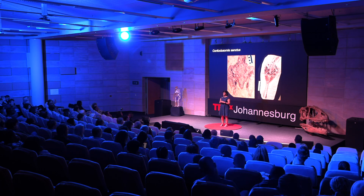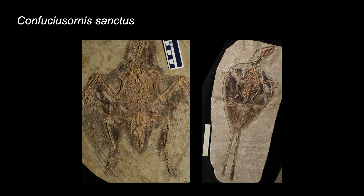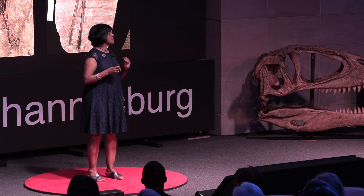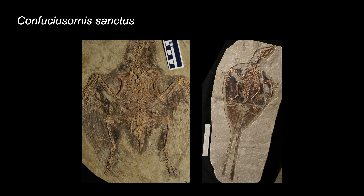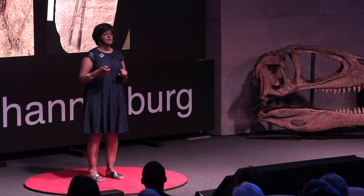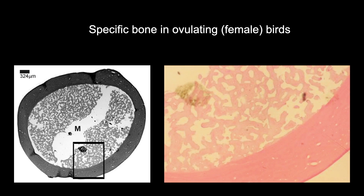I've been enormously fortunate to study a particular bird called Confuciusornis sanctus from China — one of the best represented birds, known by over a thousand specimens. Some of them have long ornamental tail feathers and some have none. Our work on the bone microstructure told us that birds without the long tail feathers are females, because inside their bones there was a special bone tissue that we only find in modern birds that are ovulating.